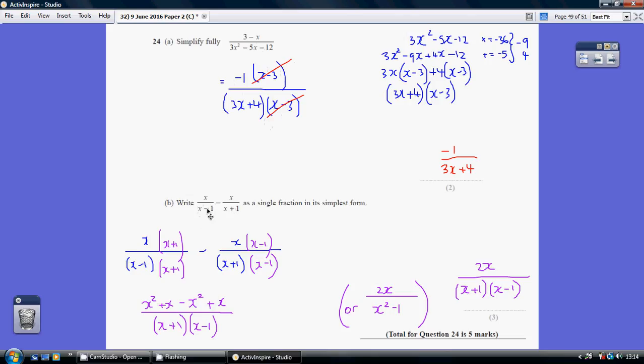What do I need to do to this first term to have a denominator of (x-1)(x+1)? I have to multiply top and bottom by x+1. Similarly with the second term, how do I end up with a denominator of (x+1)(x-1)? I have to multiply top and bottom by x-1.